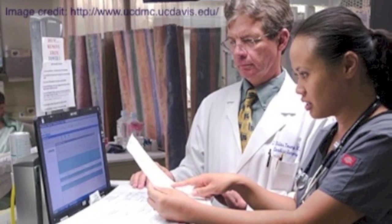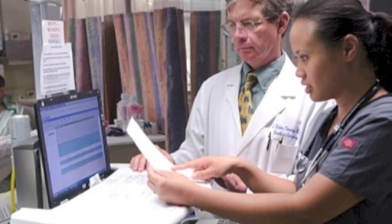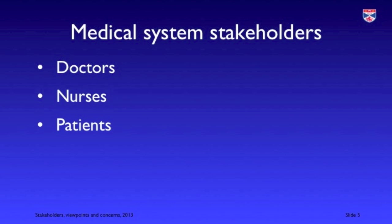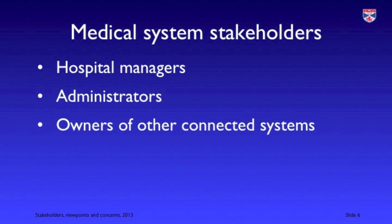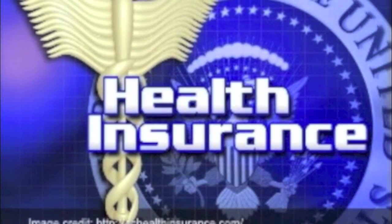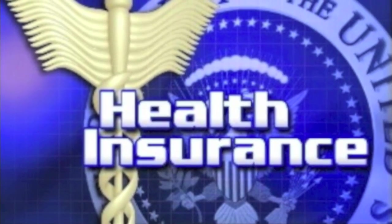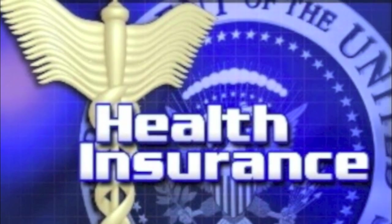Here are examples of stakeholders in a medical information system that provides information to doctors and hospital managers about patients and their treatment. Examples of stakeholders here are doctors, nurses, patients, hospital managers, administrators, and the owners of other connected systems. There may also be other stakeholders depending on how the health system is funded — in the United States, insurance companies are likely to be important stakeholders; in public health systems, it may be the government.